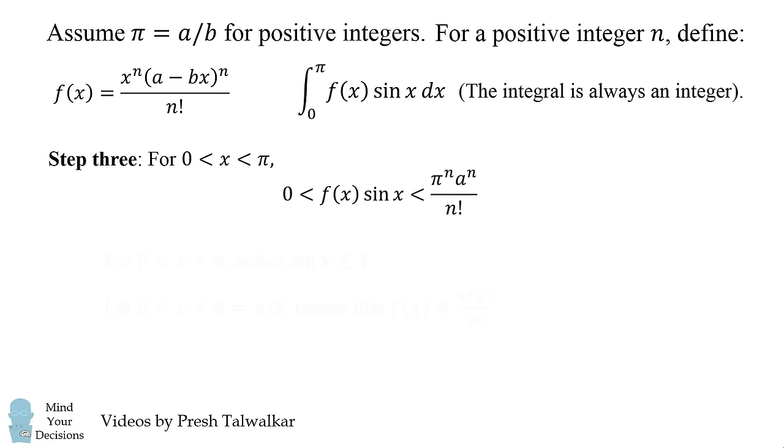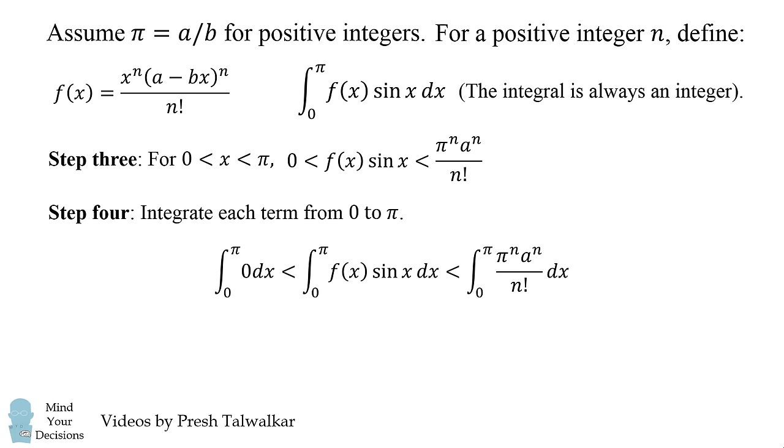We'll now integrate each term from 0 to pi. Let's evaluate each of these integrals. The left hand side integral is 0, and the right hand side integral will be pi^(n+1) multiplied by a^n all over n factorial.